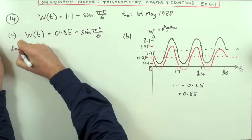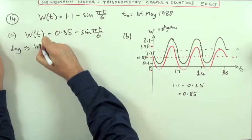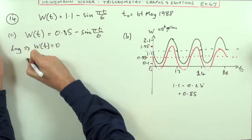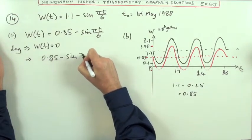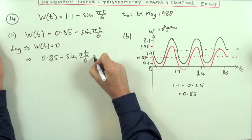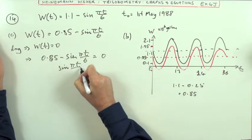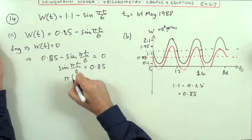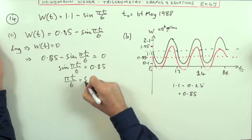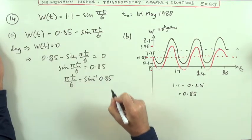So it's going to be dry if that comes to zero. If W(t) equals zero, which means I've got 0.85 minus sine pi t upon 6 should equal zero. So sine pi t upon 6, taking it that way and reading it that way, it should be 0.85. So pi t upon 6 is going to be inverse sine of 0.85.